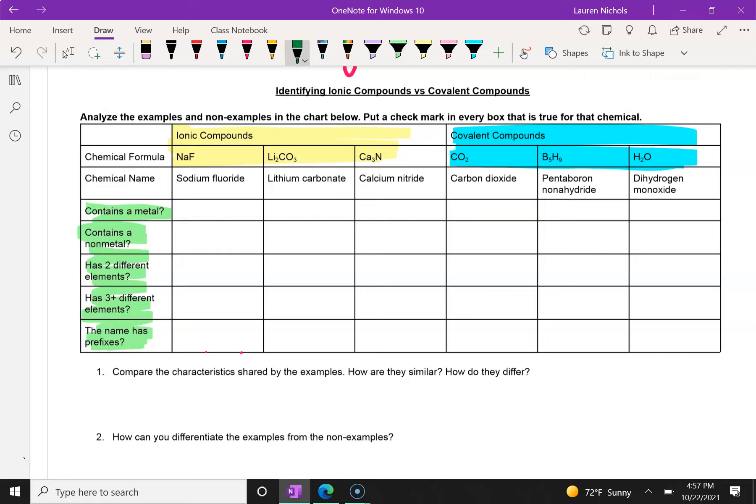So for example, if I'm looking at NAF, which is sodium fluoride, does it contain a metal? Yes, we know that sodium is a metal. Does it contain a non-metal? F, or fluorine, is a non-metal, so the answer is also yes. Does it have two different elements? Yes, it does. It has sodium and it has fluorine. Does it have three or more, like three or four different elements? No, there are only two.